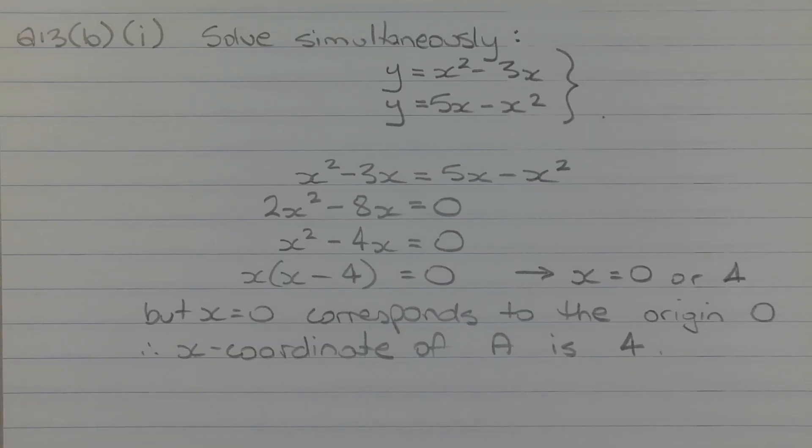Since point A represents a point of intersection on both curves, we solve simultaneously the equations y equals x squared minus 3x and y equals 5x minus x squared. Using the substitution method, we can form the equation x squared minus 3x equals 5x minus x squared. Moving the terms on the right-hand side over to the left-hand side and combining like terms, we form the equation 2x squared minus 8x equals 0.